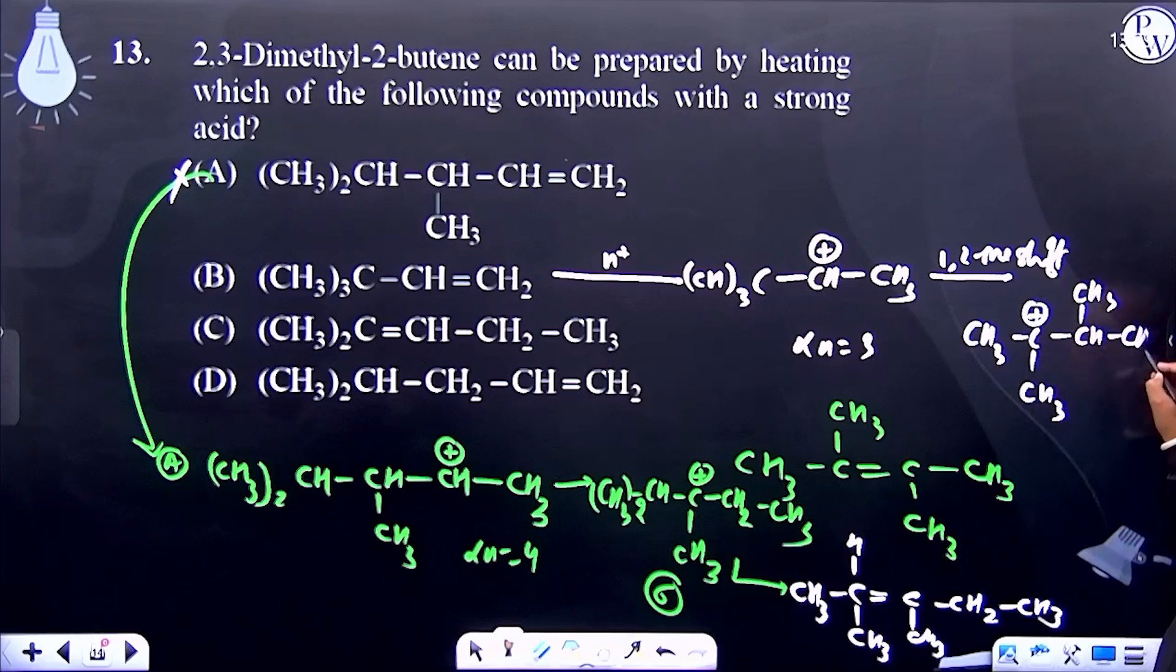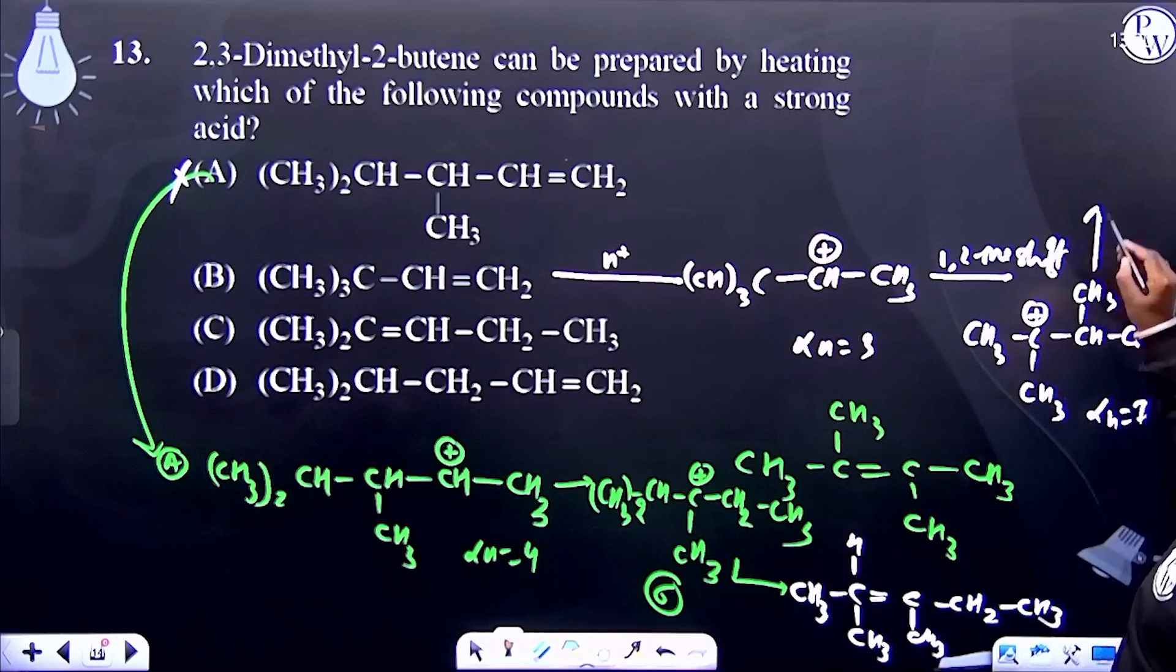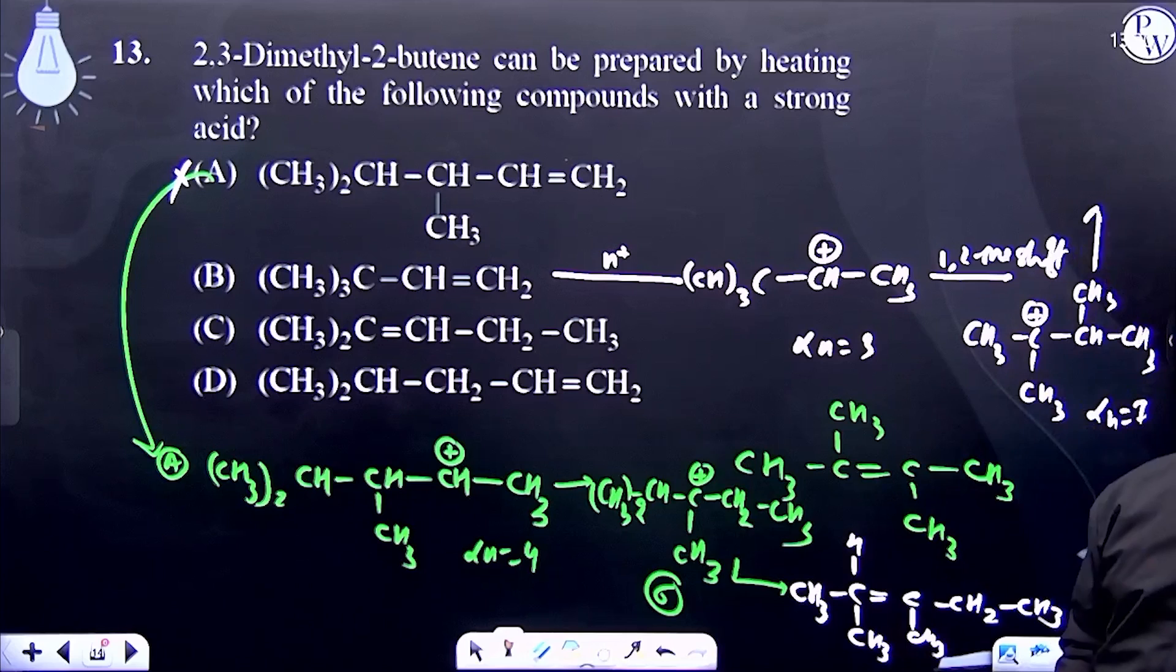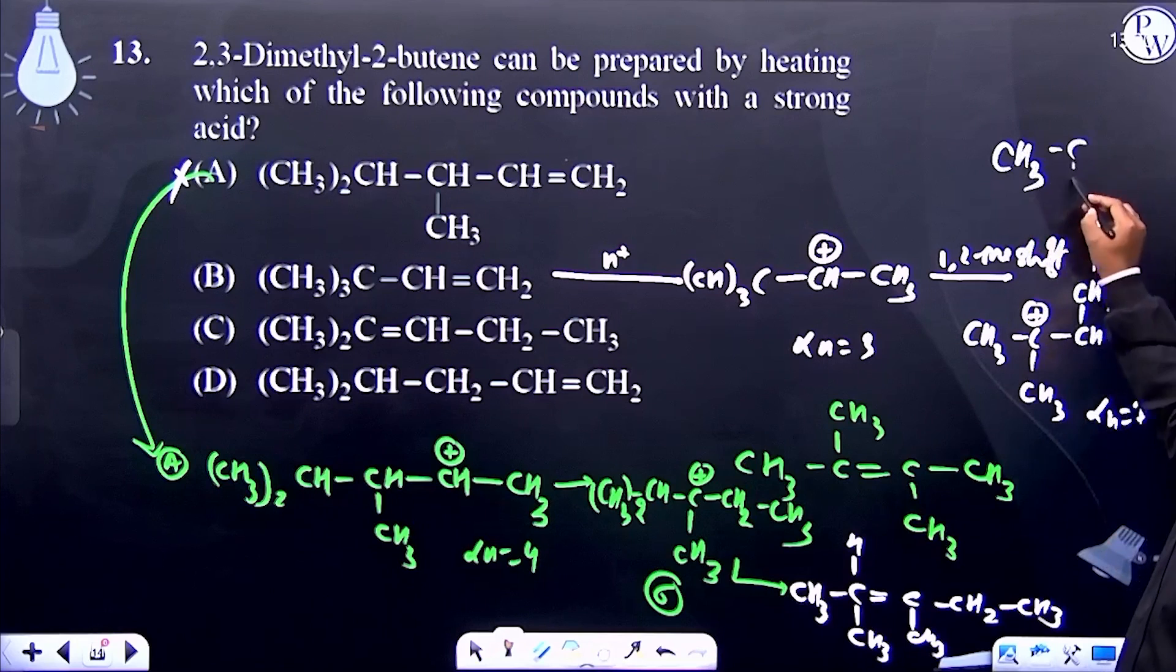This carbocation has seven alpha hydrogens. After dehydration or dehydrogenation...